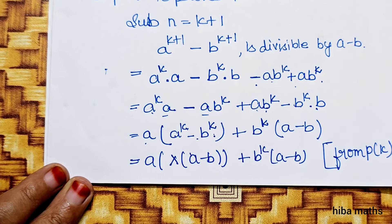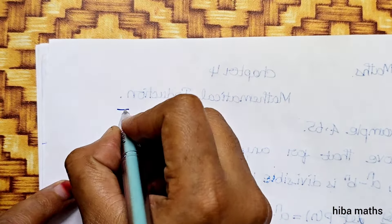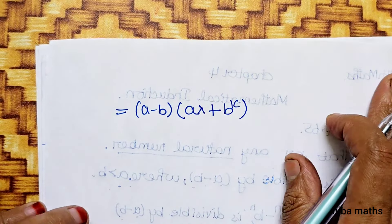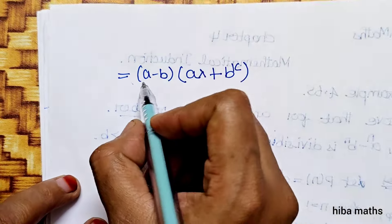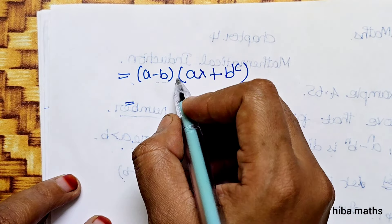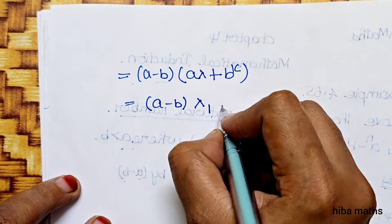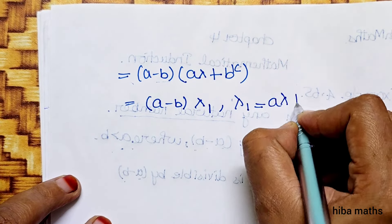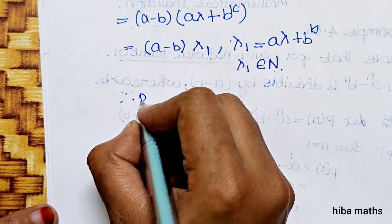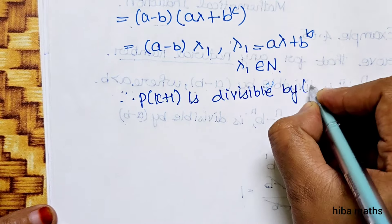Taking (a minus b) as a common factor, and substituting the inductive hypothesis where a^k minus b^k equals lambda times (a minus b), we get (a minus b) times (a lambda plus b^k). So this equals (a minus b) times lambda1, where lambda1 equals a times lambda plus b^k, and lambda1 is a natural number.